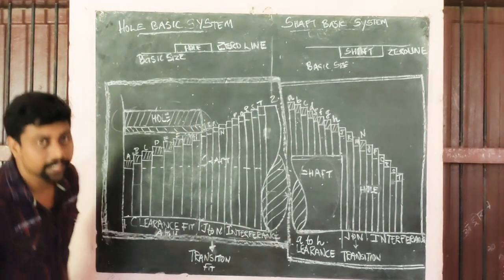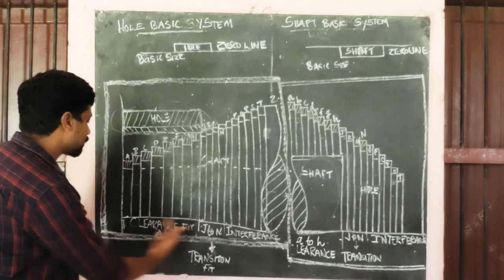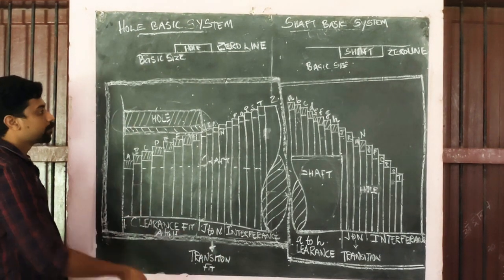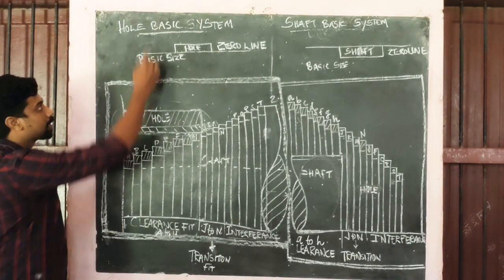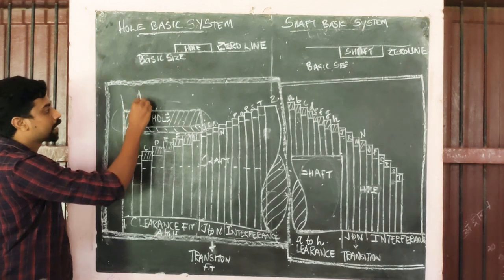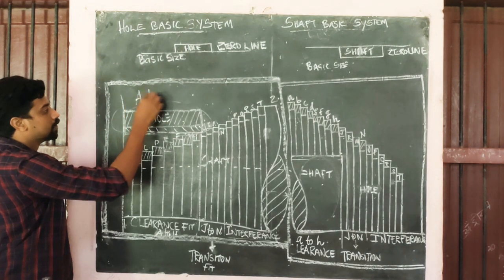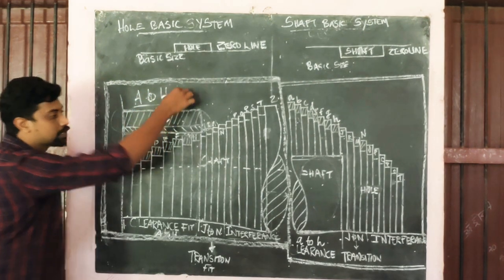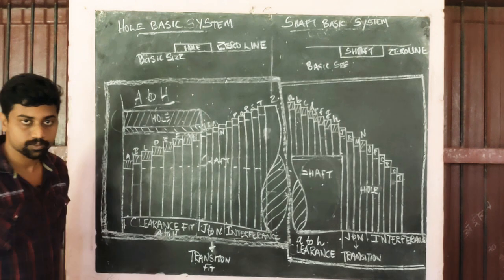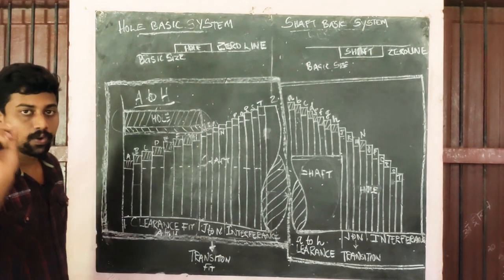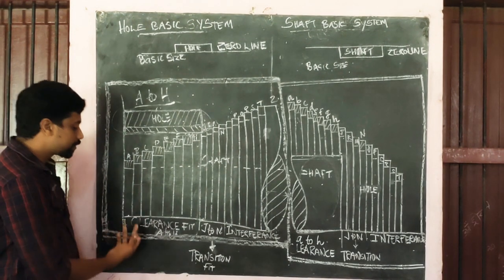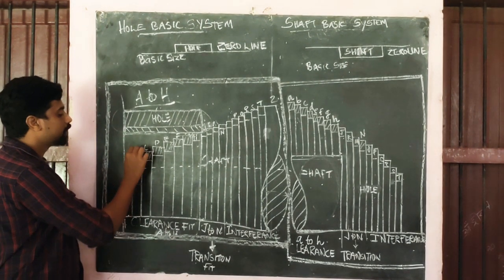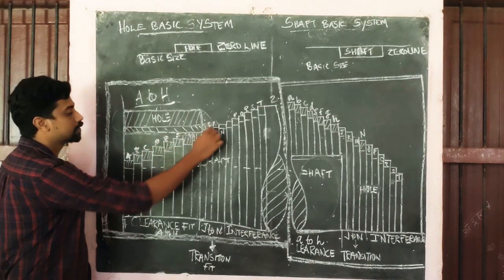If you have a hole, you can fit it. In the hole basis system, we have shaft designations: a, b, c, d, e, f, h.